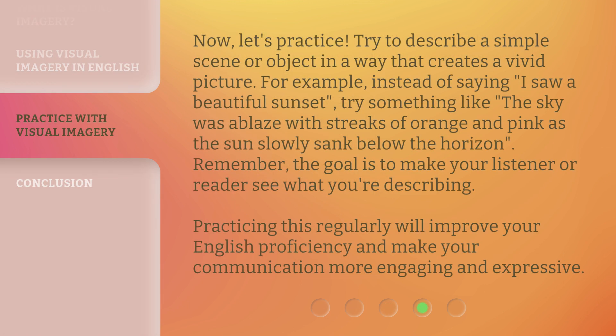Now, let's practice. Try to describe a simple scene or object in a way that creates a vivid picture. For example, instead of saying 'I saw a beautiful sunset,' try something like: 'The sky was ablaze with streaks of orange and pink as the sun slowly sank below the horizon.' Remember, the goal is to make your listener or reader see what you're describing. Practicing this regularly will improve your English proficiency and make your communication more engaging and expressive.